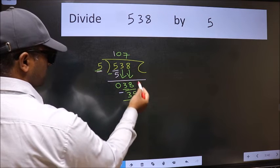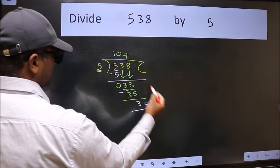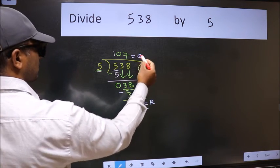No more numbers to bring down. So we stop here. This is our remainder and this is our quotient.